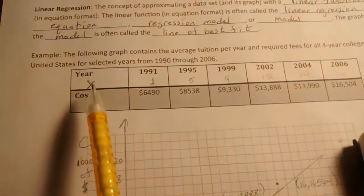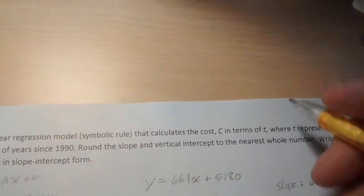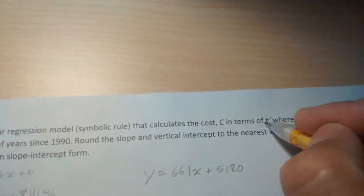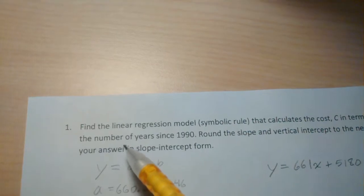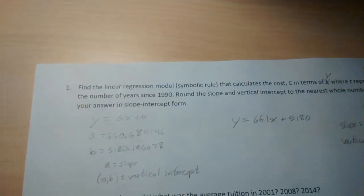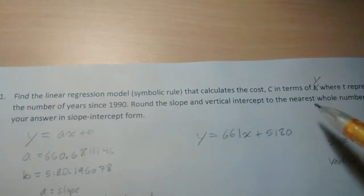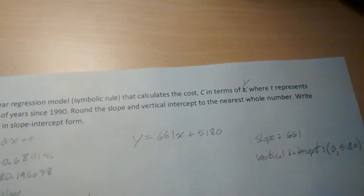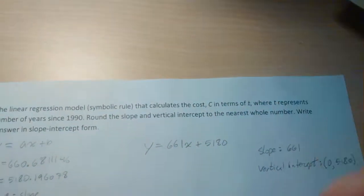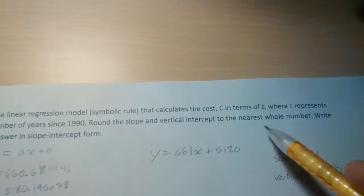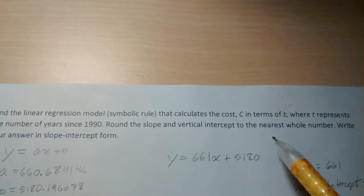So I used Y here, maybe we should change that. I'm going to change that to Y. Round the slope and vertical intercept to the nearest whole number. So maybe we should leave that as T, not to be confused with that Y. Sorry about that. Let's round the slope and vertical intercept to the nearest whole number.